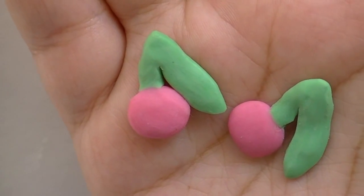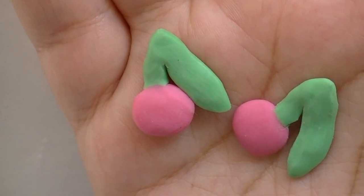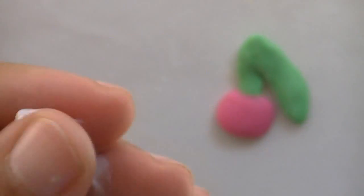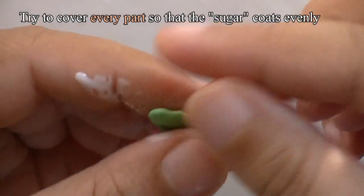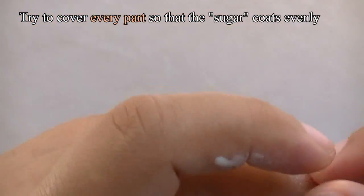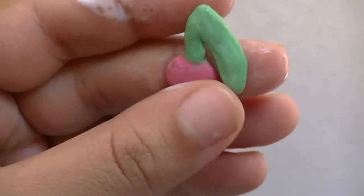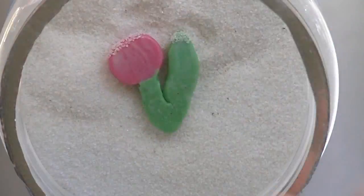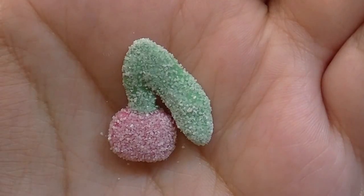Once you have your gummy cherries, put some translucent liquid Sculpey and then dunk them in the sand. Now put it aside.